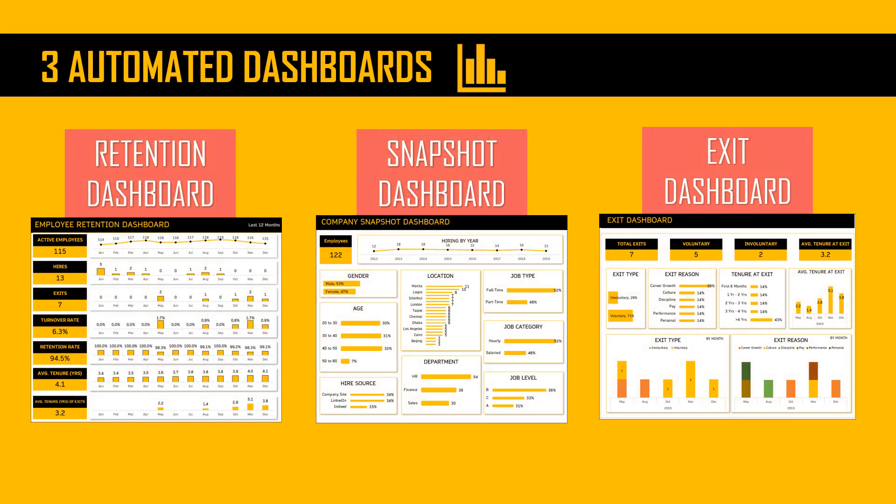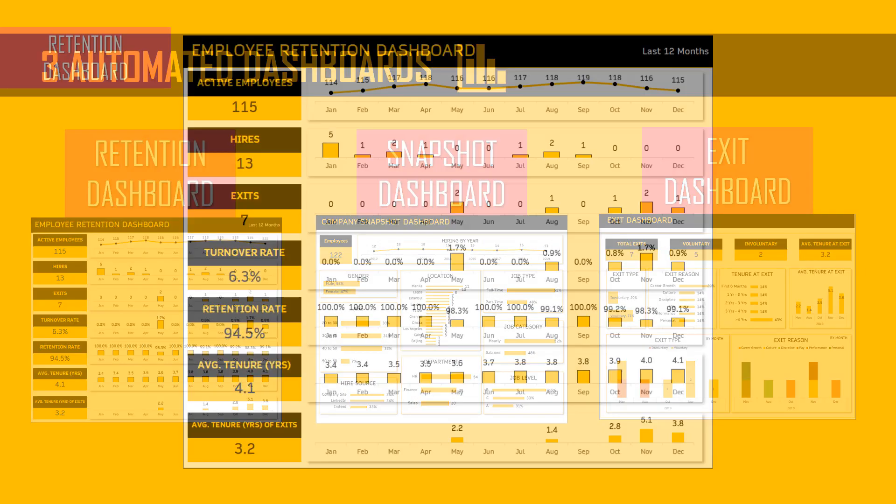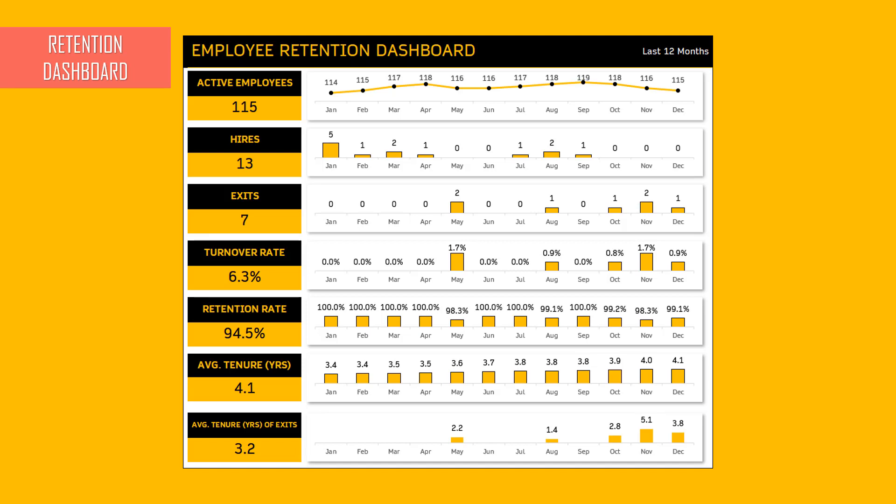The three automated dashboards are the retention dashboard, snapshot dashboard, and exit dashboard. The retention dashboard provides those seven effective KPIs: active employees, number of new hires, exits, turnover rate, retention rate, average tenure of your employee base, and average tenure of those employees who have exited. All of this is automatically and immediately updated in the dashboard as soon as you enter the data.